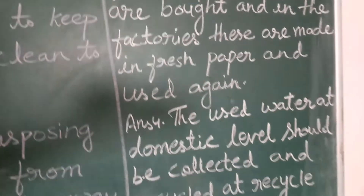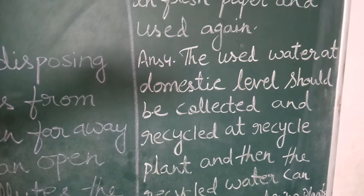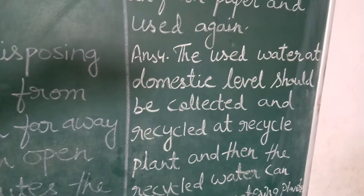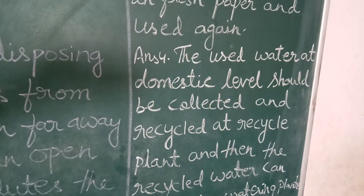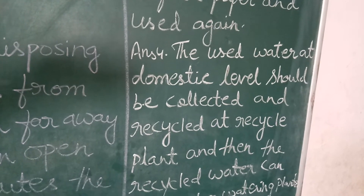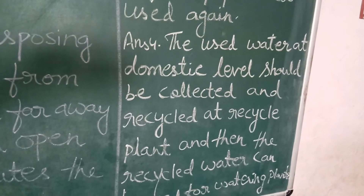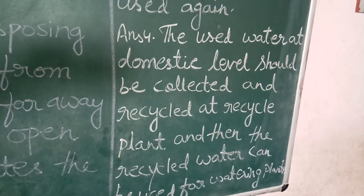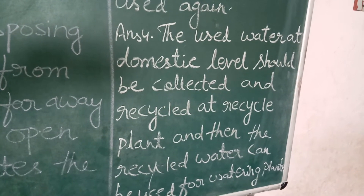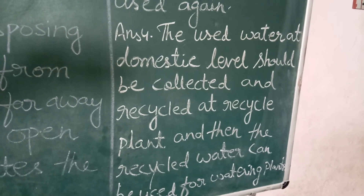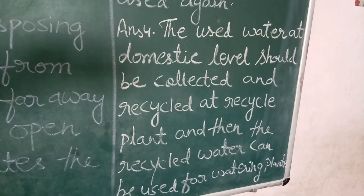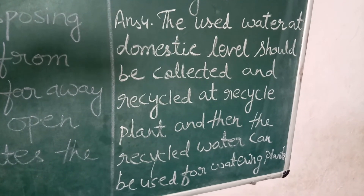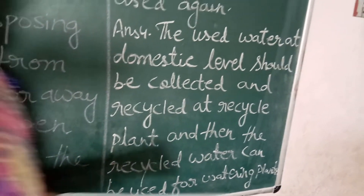Question number 4. What should be done to recycle used water at the domestic level? Answer: used water at the domestic level should be collected and recycled at recycling plants, and then the recycled water can be used for watering plants.